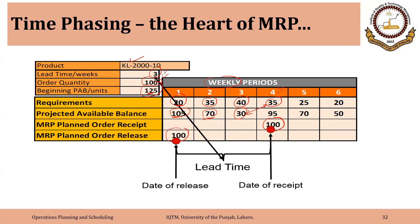We need this item in week four, so we have to place the order in week one. Week one is the date of release of the order and week four is the date of receipt. We are placing the order at the start of week one, and weeks one, two, and three are consumed in purchasing or making the item, which is then received at the beginning of week four. We already had 30 on hand, and now we are receiving 100, so 130 minus the requirement of 35 leaves us with 95 items at the end of week four. In week five, we have a requirement of 25 with 95 available, so after meeting this requirement we will be left with 70, and after meeting the requirement of week six, we will be left with 50 items.